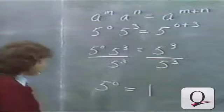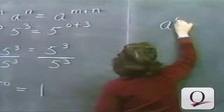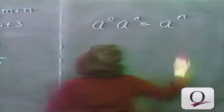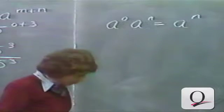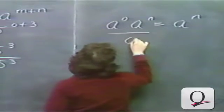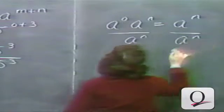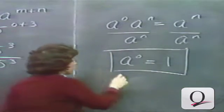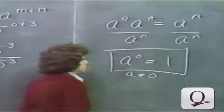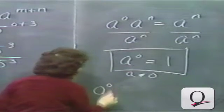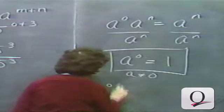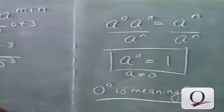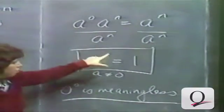There was nothing sacred about the number 5 here. If we had a to the 0 times a to the n, this must be a to the 0 plus n, or a to the n, if the first rule of exponents is going to hold true. Dividing both sides by a to the n, we get that a to the 0 should logically be defined to be equal to 1. By the way, this is only true if a is not 0. Zero to the zero power is going to be meaningless.